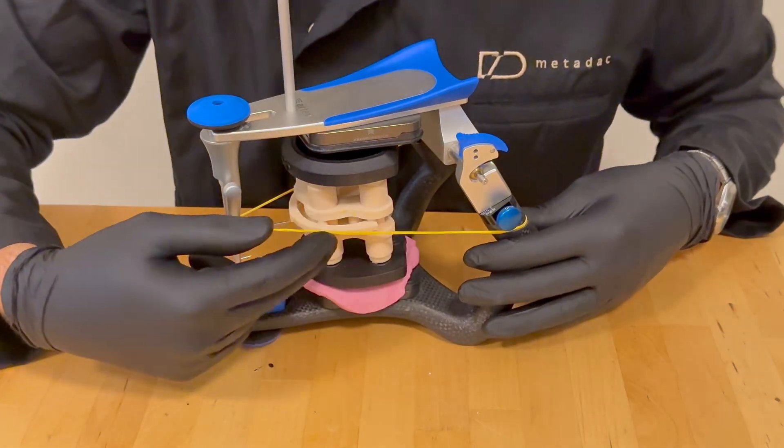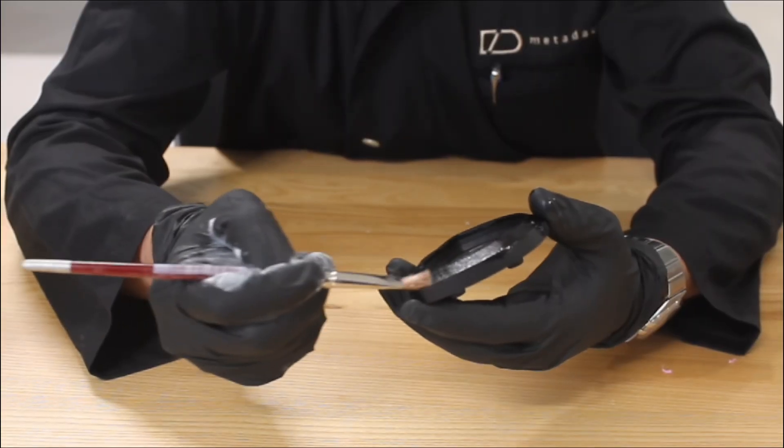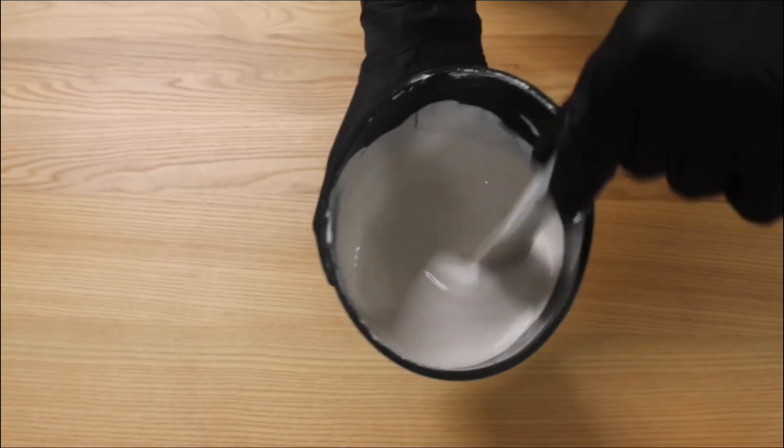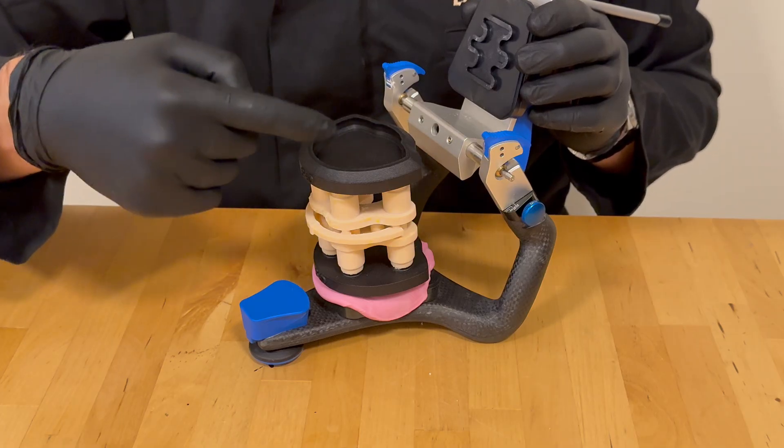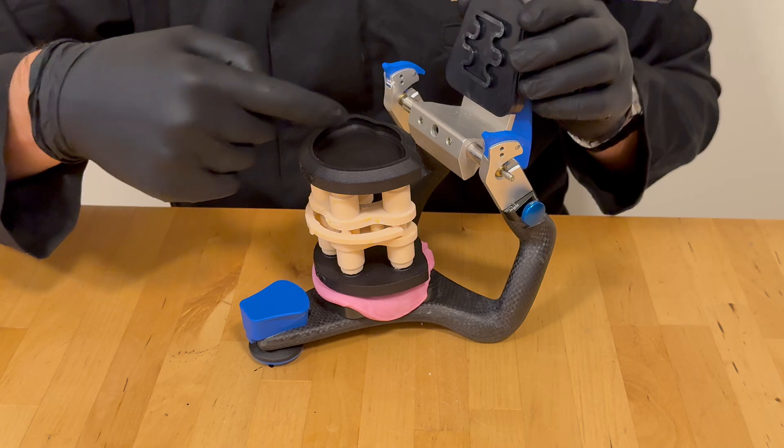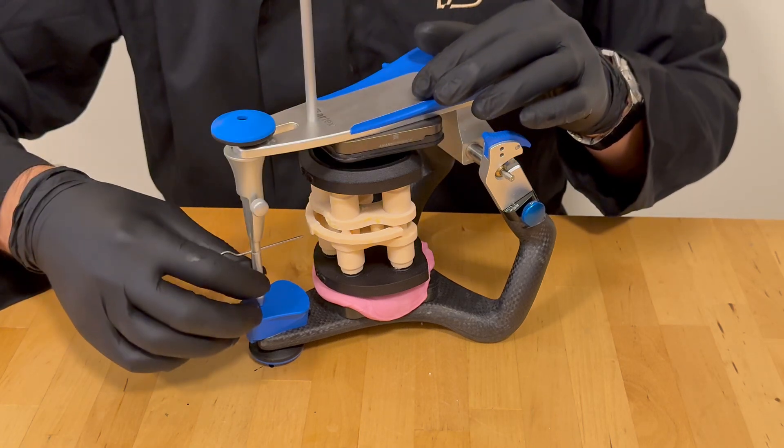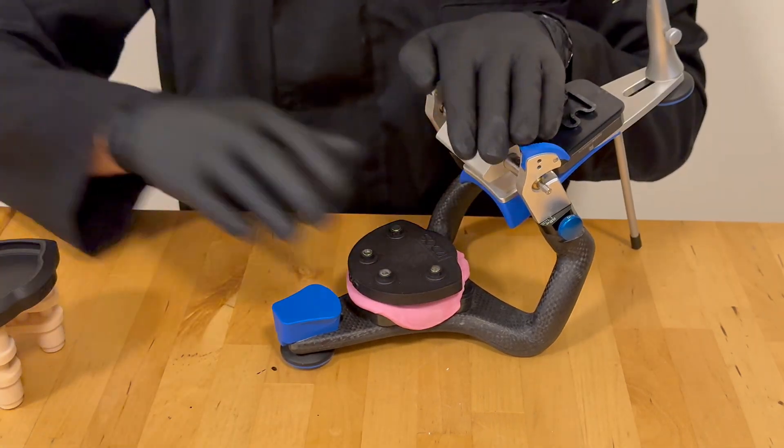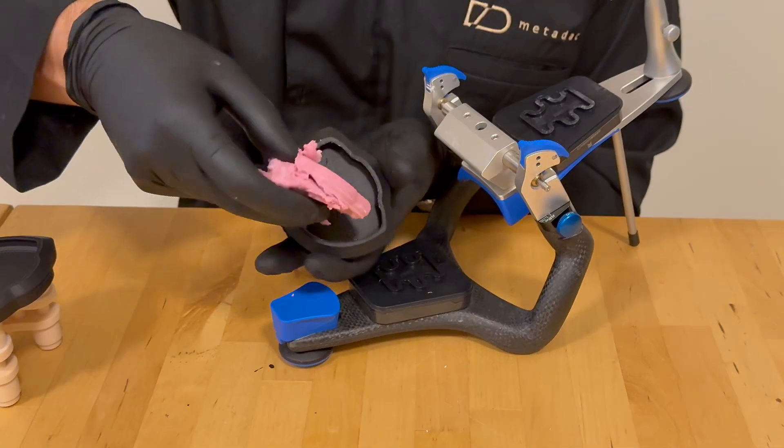Before applying plaster, use Vaseline to prevent residue from sticking to the DACOS plates. Then mix the plaster and begin securing the upper DACOS plate. Once the plaster has set, approximately 30 minutes, remove the temporary silicone and proceed to install the lower DACOS plate.